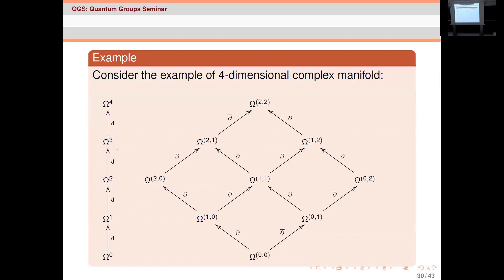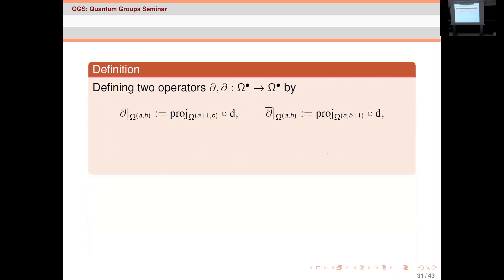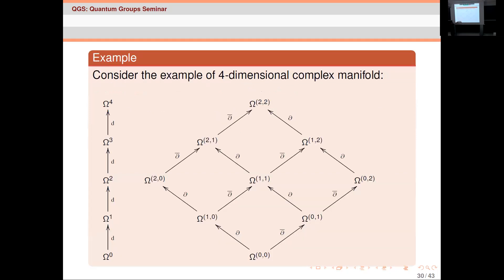For example, a four-dimensional complex manifold: the differential geometric part is just a straight line, but taking into account the complex structure you get the Hodge diamond. All these components are connected by the operators ∂ and ∂-bar — composing the differential d with projection immediately to the left or immediately to the right. Condition three — that d = ∂ + ∂-bar — is equivalent to the integrability condition for the complex structure.